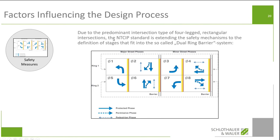NTCIP goes further — it doesn't only put safety on the controller level. Because NTCIP always works with the standard dual ring barrier system, you find something like this in the basic controller configuration, where you define certain stages or movements that can go with one another, and where certain barriers are. Basically, there are two barriers — these two rings can move individually. Ring one could move from movement one to movement two, and ring two can move at any point from five to six, but they both have to cross the barrier at the same time. So three and seven will always start at the same time, two and six will end at the same time, but movements one, two and five, six can be changed individually.